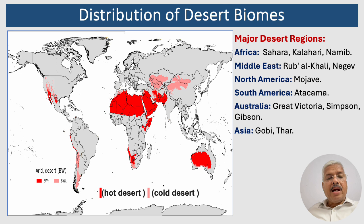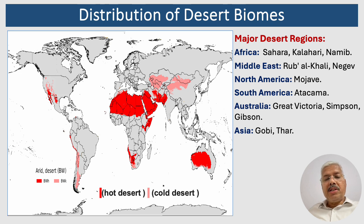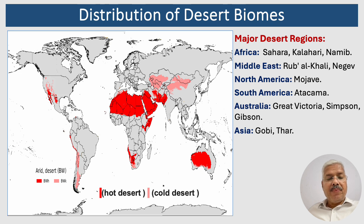The Arabian Desert and the Negev Desert are prominent desert regions in the Middle East. In North America, the Mojave Desert is found in the southwestern United States and northern Mexico. The Atacama Desert in Chile and Peru is one of the driest places on Earth. The Great Victoria Desert, the Simpson Desert, and the Gibson Desert are located in central and western Australia. The Gobi Desert in Mongolia and China, and the Thar Desert in India and Pakistan, are significant desert regions in Asia.